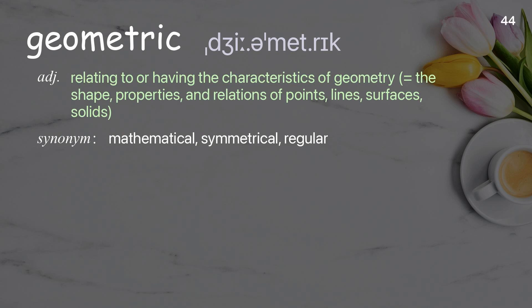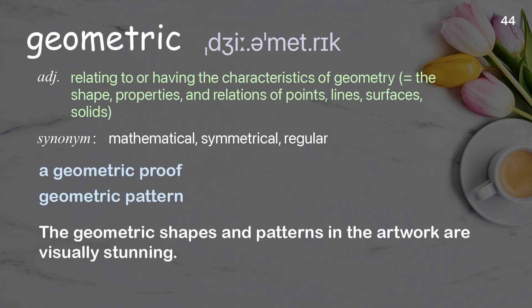Geometric. Relating to or having the characteristics of geometry — the shape, properties, and relations of points, lines, surfaces, and solids. Examples: A geometric proof. Geometric pattern. The geometric shapes and patterns in the artwork are visually stunning.